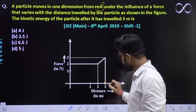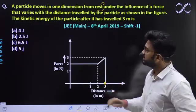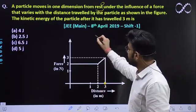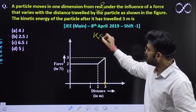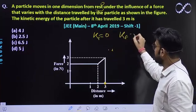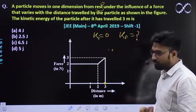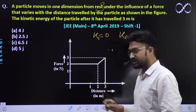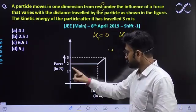The kinetic energy of the particle after it has travelled 3 meters is - that means after traveling 3 meters what will be its kinetic energy? Since initial kinetic energy will be zero because it started from rest, and the final kinetic energy is what we need to find. The force and displacement graph is already given.